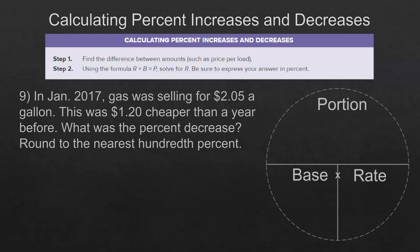In this case, it's already told us gas was selling for $2.05 a gallon in January of 2017. This was $1.20 cheaper than a year before. What was the percent decrease? We actually already know how much it decreased. It decreased by $1.20. The year before it was $1.20 plus $2.05, so $3.25. And then we're looking for the rate. So just think back. The original cost was $3.25. We're going to take $1.20 and divide it by $3.25 to find out the percent of the decrease.